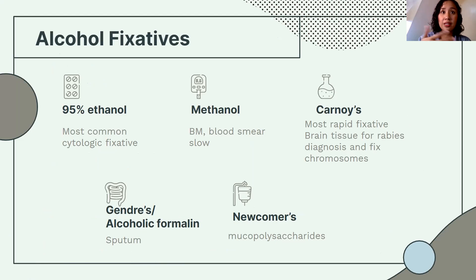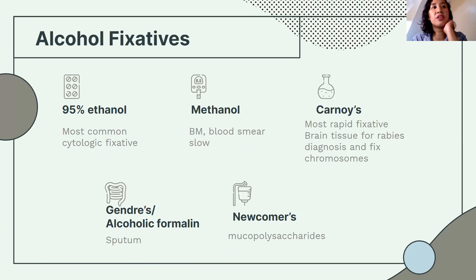Types of alcohol fixatives: 95% ethanol is the most common cytologic fixative — used for pleural fluid, vaginal smears, and various cytological fluids. Methanol is used for bone marrow and blood smears. Carnoy's fixative is the most rapid fixative and is also used for fixing brain for rabies diagnosis and for fixing chromosomes.